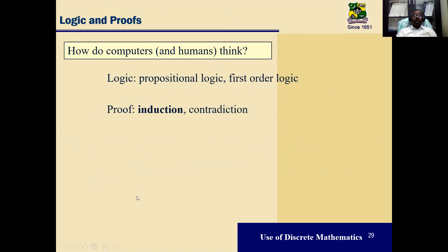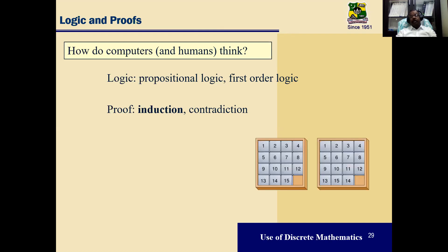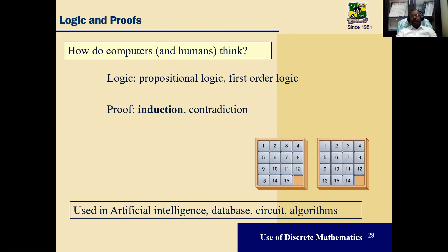Next is logic and proofs — how do computers and humans think? Propositional logic, predicate logic, proof by induction, and proof by contradiction are all applications of mathematics used in artificial intelligence, database design, logic circuits, and algorithms.